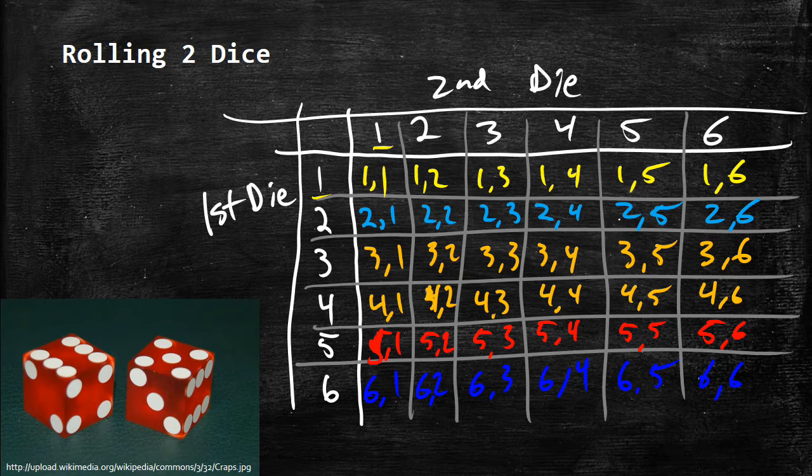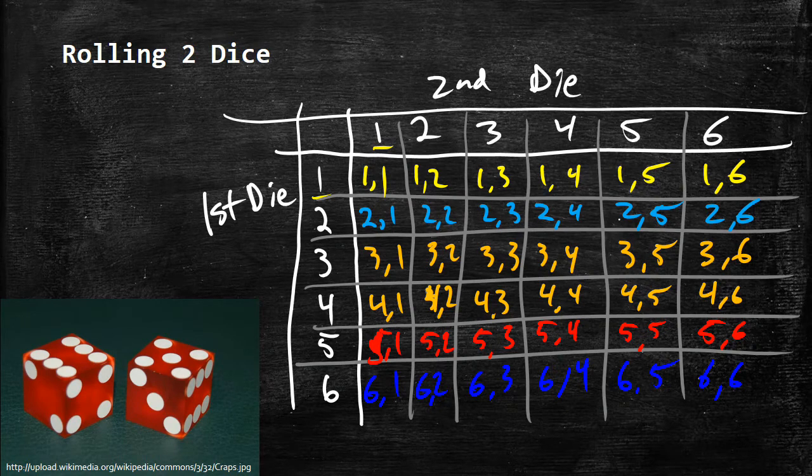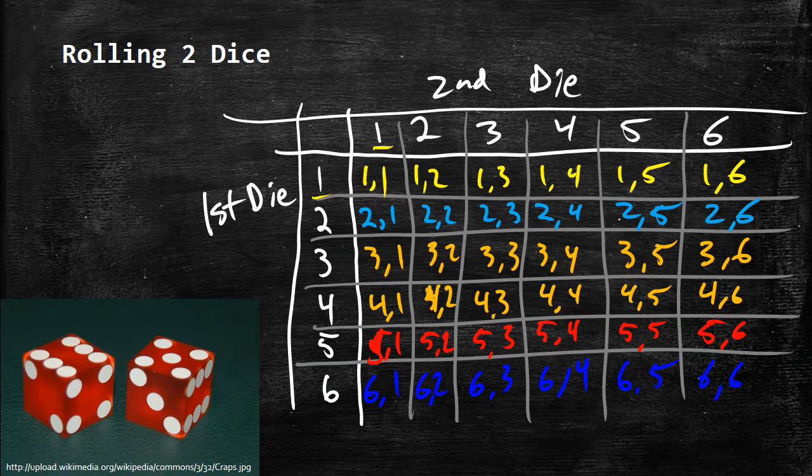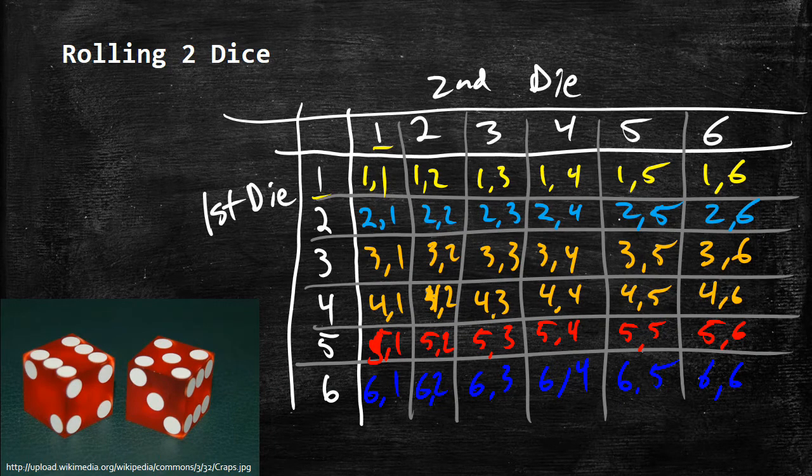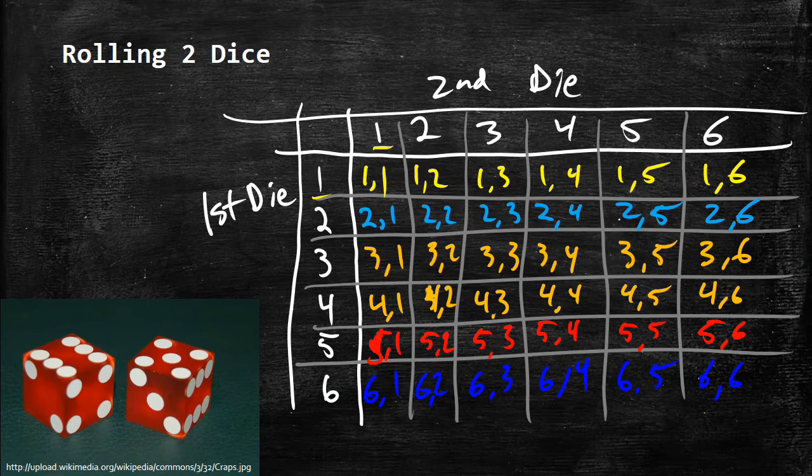Right here, what I've done is I've made my probability table for an experiment that involves rolling two dice and getting all our possible outcomes. What this is basically saying is that these are the 36 possible outcomes you can get when you roll two dice together. You could get 1,1, you could get 3,6, you could get 5,2. All of these are the possible outcomes. These are the only ones that are possible.